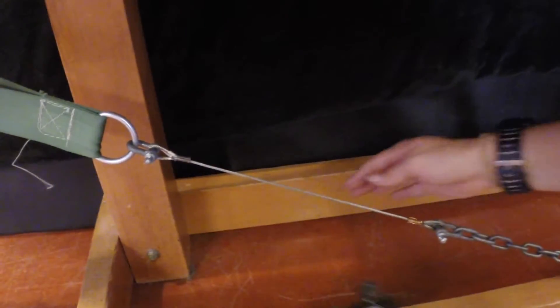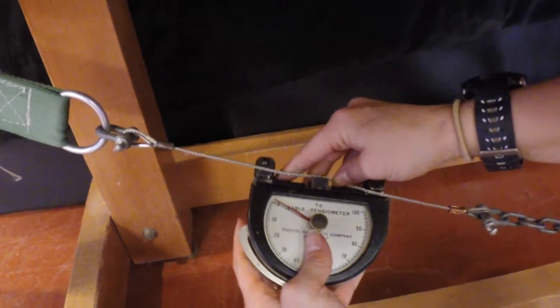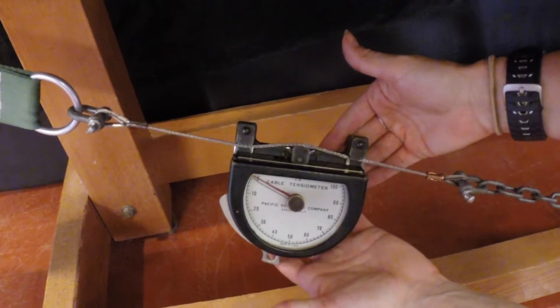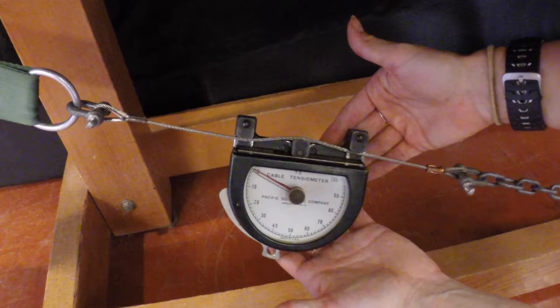Now attach the cable tensiometer to the cable underneath the table. You'll have to ask your client to take the tension off the cable in order to put it on. The cable should pass below the two outside plates and above the middle plate. Make sure to always hold on to the cable tensiometer because if there's no tension in the cable, it'll fall off.